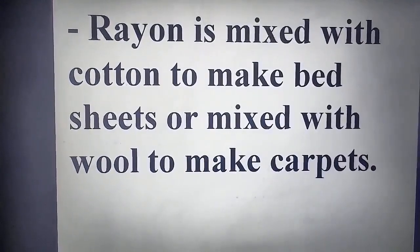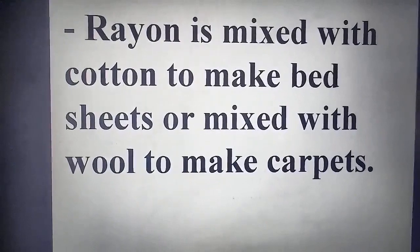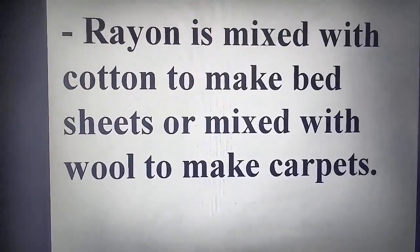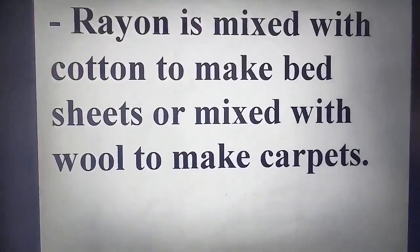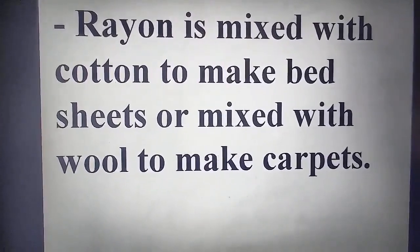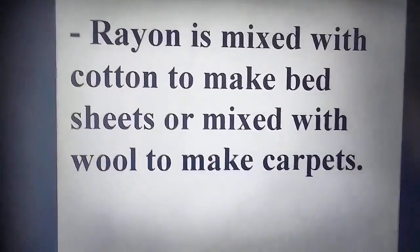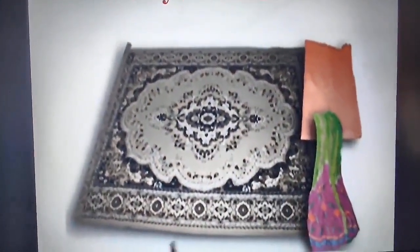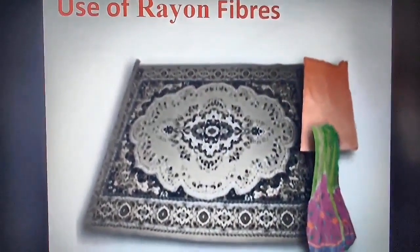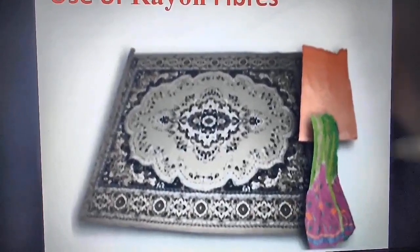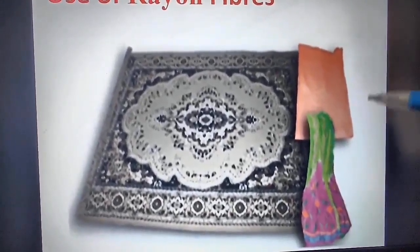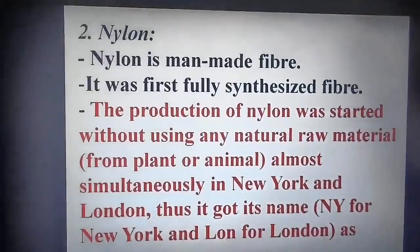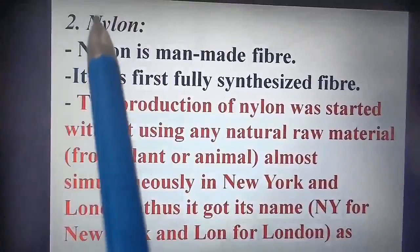Rayon is mixed with cotton to make bed sheets, or mixed with wool to make carpets. We use rayon bed sheets in our day-to-day life — bed covers and bed sheets. Natural wool mixed with rayon is used to make carpets used in our homes. Rayon is also used to make clothes like saris and other garments as artificial silk.